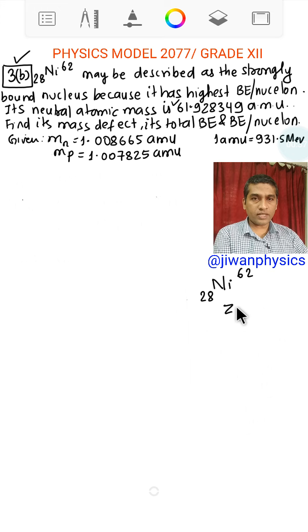Let me write over here Z equals number of protons equal 28 and A is the mass number which also gives the total number of nucleons in Ni.